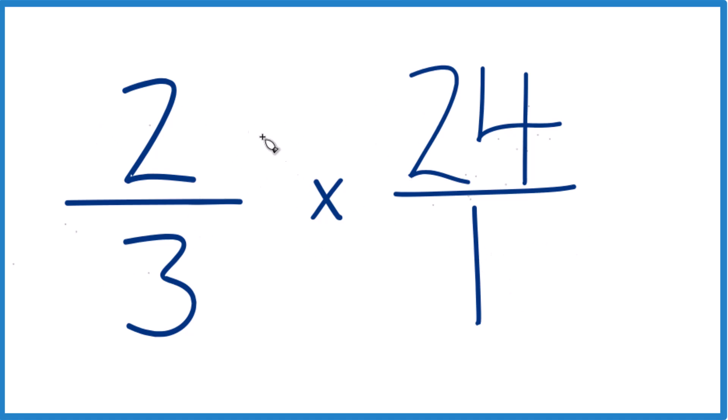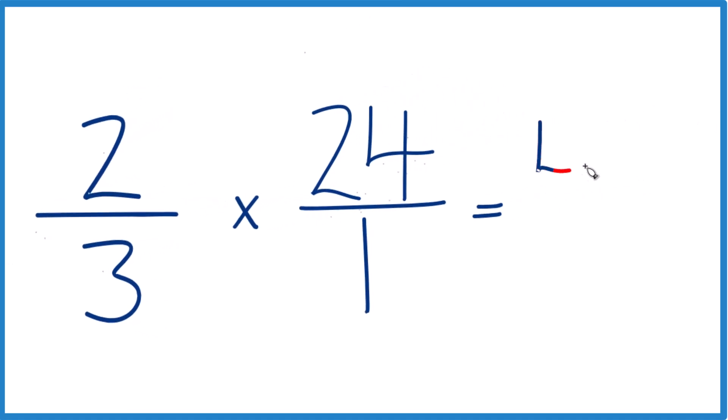When we multiply fractions like two-thirds times 24 over 1, we multiply the numerators. 2 times 24, that's 48. And then we multiply the denominators. 3 times 1 is 3.